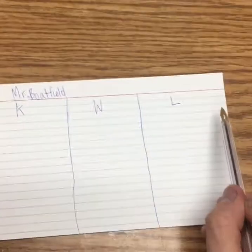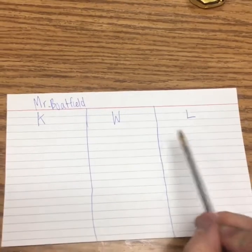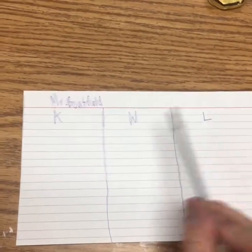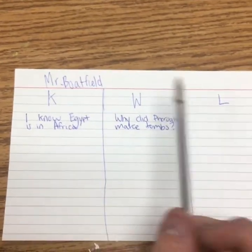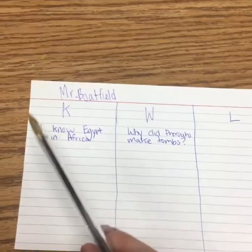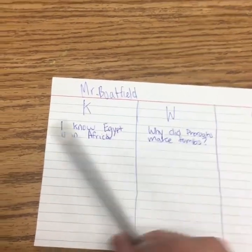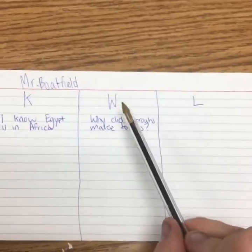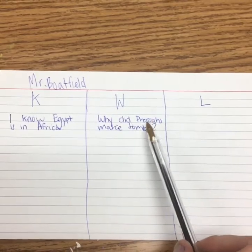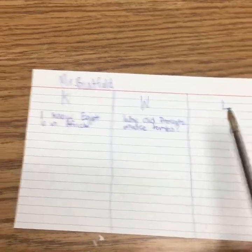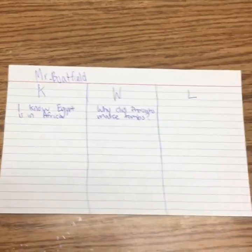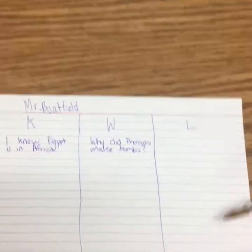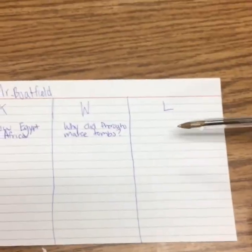After the video we'll write one thing we learned — maybe that thing answered your question. Here's what I have so far: for K, I know Egypt is in Africa. For W, my question is why did the Pharaohs make tombs? You won't fill in the L until after the video, because you're going to write down one thing you learned.